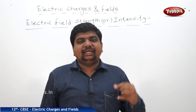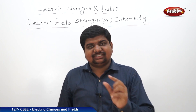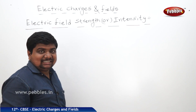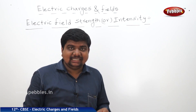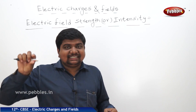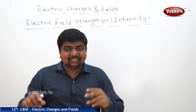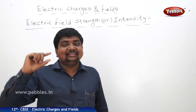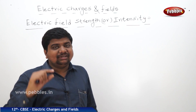We are going to discuss about the electric field strength or electric field intensity. According to the definition of the electric field we discussed, a test charge is experiencing the force of attraction or force of repulsion. Electrostatic force is of two types: force of attraction and force of repulsion. The test charge is experiencing any one of these forces. The amount of force experienced by the test charge at that given point is called electric field intensity or electric field strength.